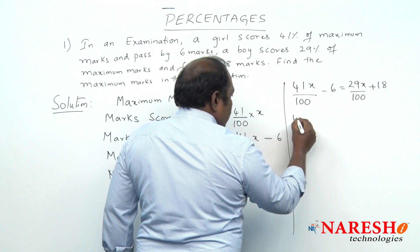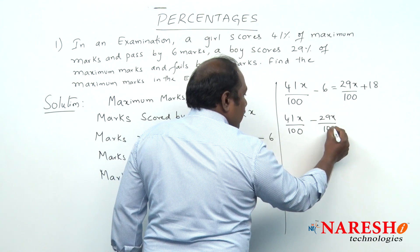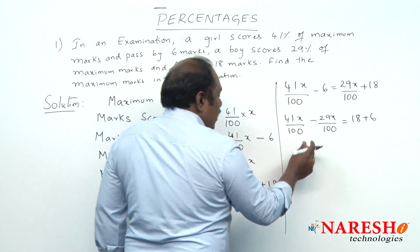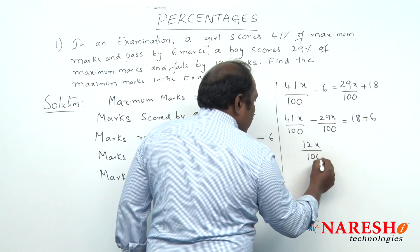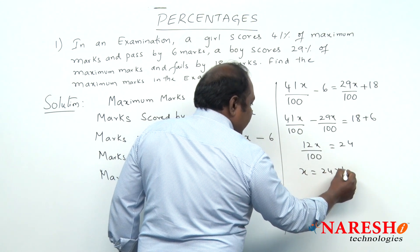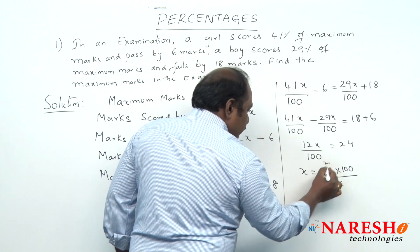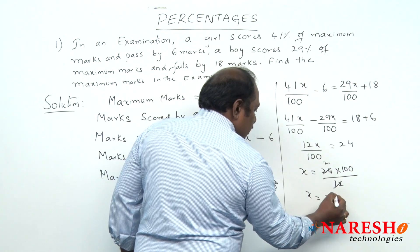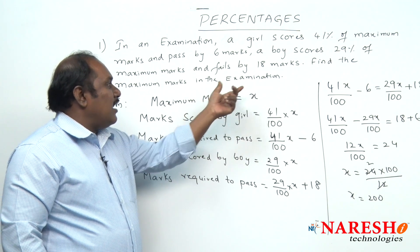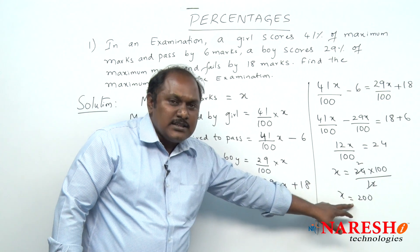Solving this: 41x/100 − 29x/100 = 18 + 6, which gives 12x/100 = 24. So x = 24 × 100/12 = 200. X in this problem is maximum marks and the question also asks to find the maximum marks in the examination. So, the maximum marks in the examination is 200.